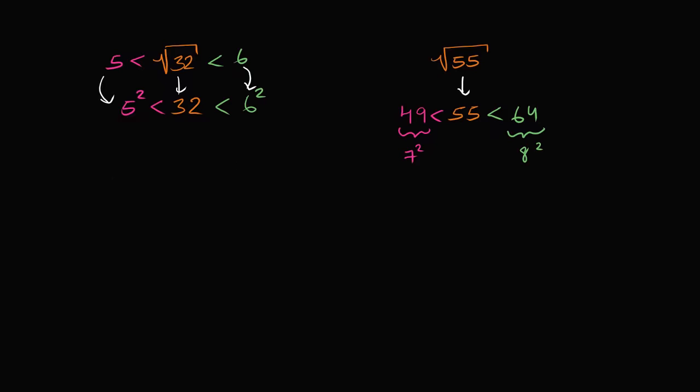And of course, 55, just to make it clear what's going on, 55 is the square root of 55 squared. That's kind of by definition. And so the square root of 55 is going to be between what? It's going to be between 7 and 8.